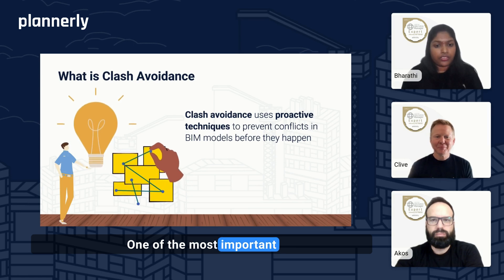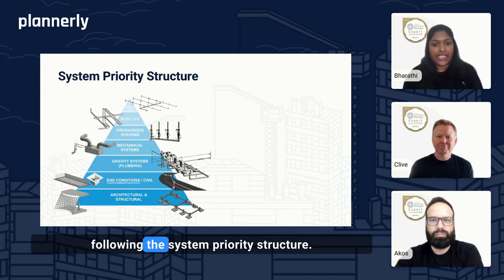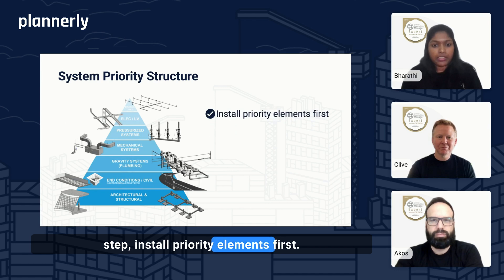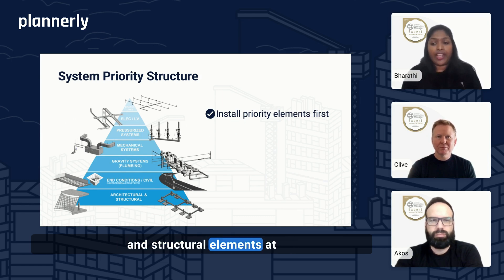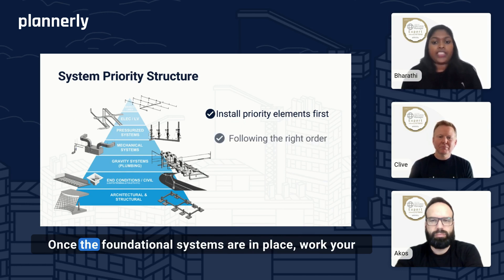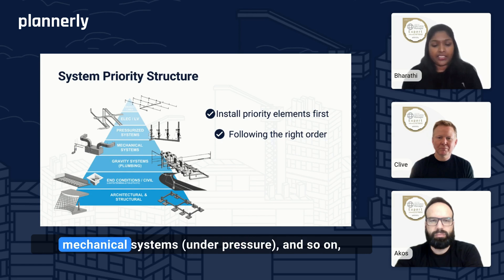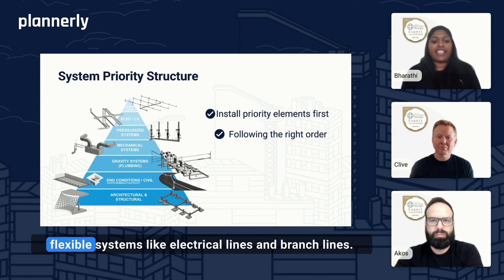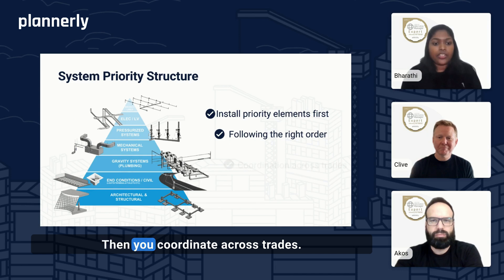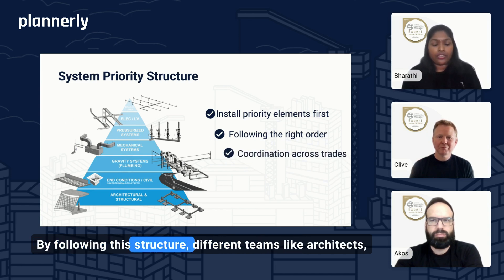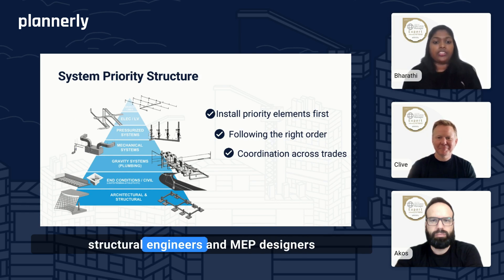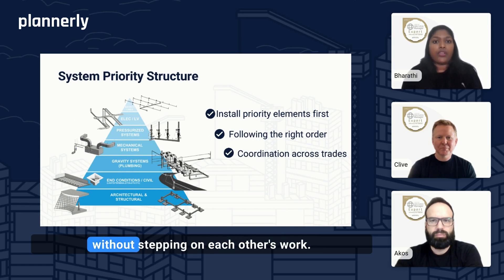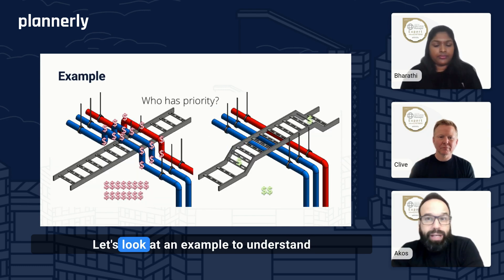One of the most important concepts of clash avoidance is understanding and following the system priority structure. In simple terms, this means: first, install priority elements first — start with systems that are most critical and least flexible, like architectural and structural elements at the base, and then follow the right order. Once the foundational systems are in place, work your way up in priority, like plumbing and mechanical systems, until you reach more flexible systems like electrical lines and branch lines. Then you coordinate across trades by following this structure, so different teams like architects, structural engineers, and MEP designers can coordinate seamlessly without stepping on each other's work.